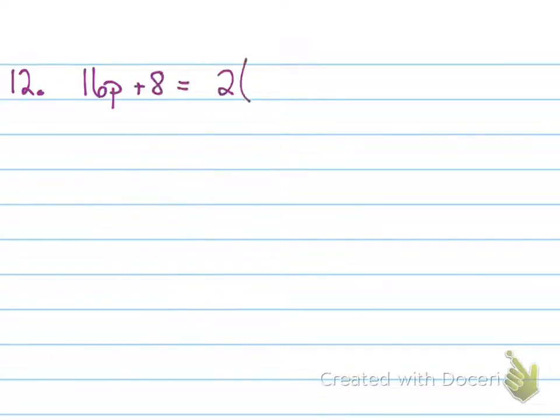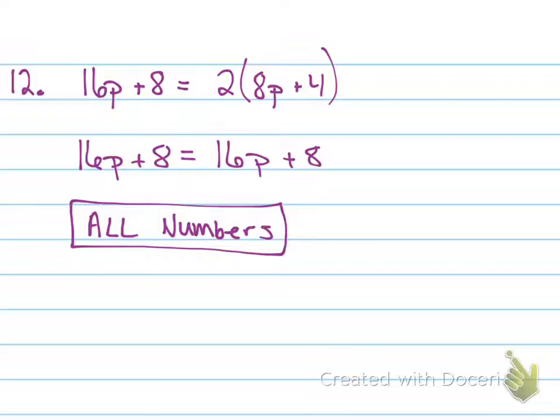Now number 12. When I distribute, this looks different. I have the same expression on both sides of the equation. What's my solution? All numbers. If the variable is the same but it has different other numbers, then it's no solution. But this one is the exact same on both sides, so it's all numbers.